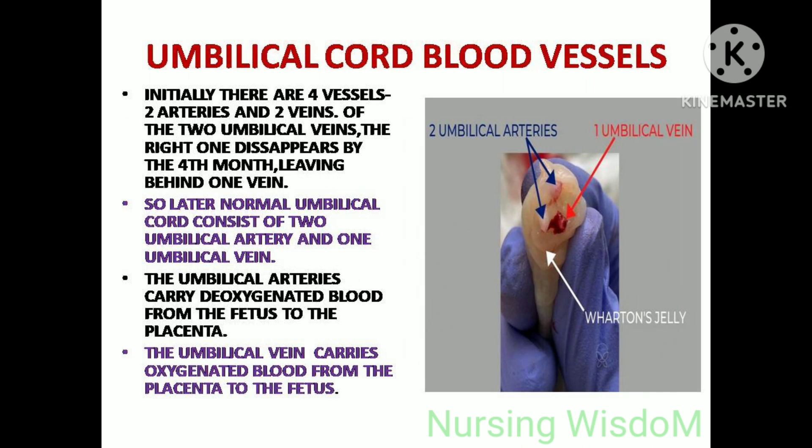Regarding umbilical cord blood vessels: initially there are four blood vessels — two arteries and two veins. Of the two umbilical veins, the right one disappears by the fourth month, leaving behind one vein. So later, the normal umbilical cord consists of two umbilical arteries and one umbilical vein. The umbilical arteries carry deoxygenated blood from the fetus to the placenta, and the umbilical vein carries oxygenated blood from the placenta to the fetus.